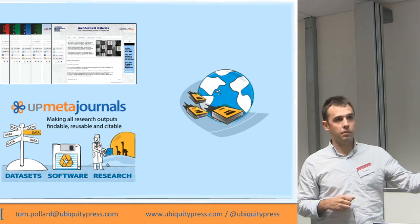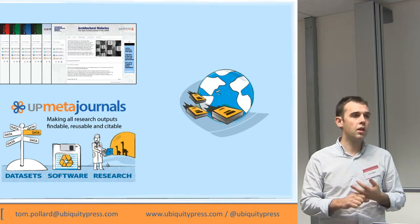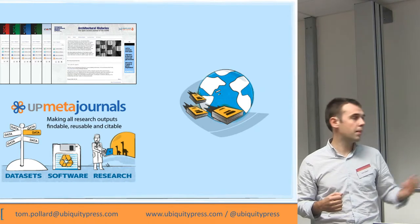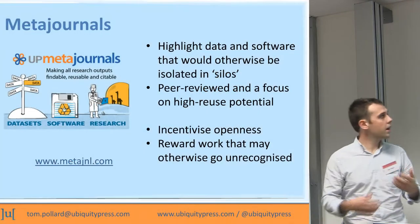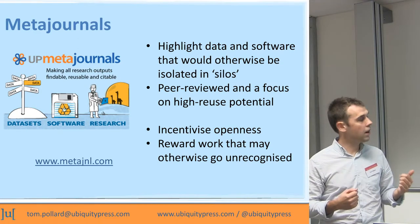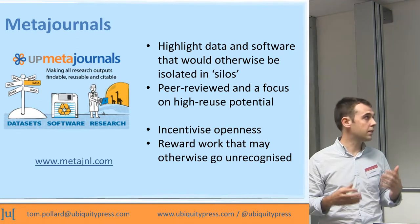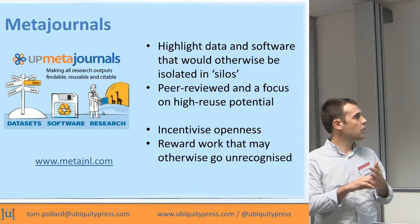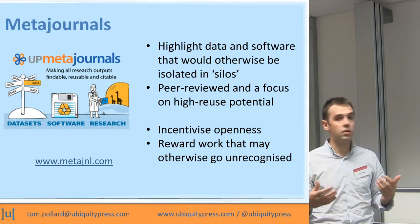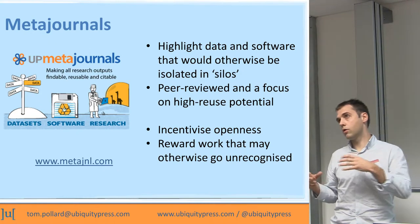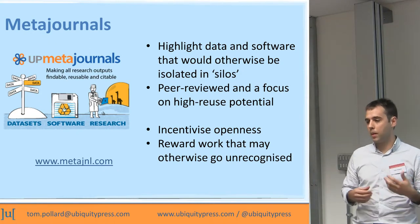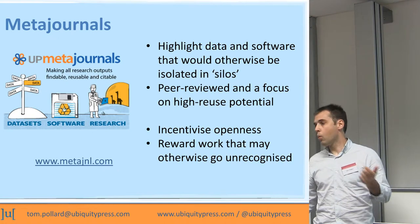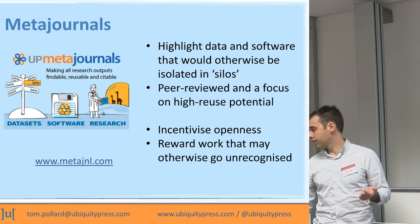We are developing an e-book platform which we launched at the start of next year. What interests me most is a meta-journal platform we've been developing. The idea is that we're making data and software accessible that would otherwise be isolated in silos. The content is peer-reviewed. We focus on making data and software available that has high reuse potential, and through citation tracking of the papers we publish, we can incentivize openness of data and software.